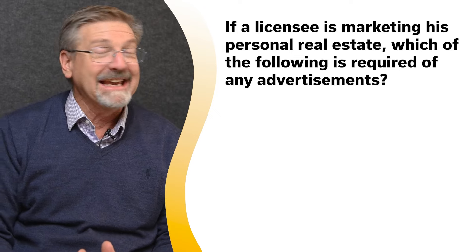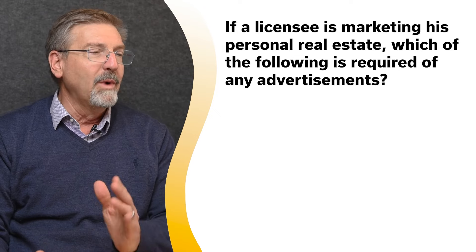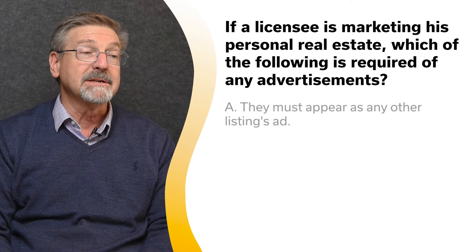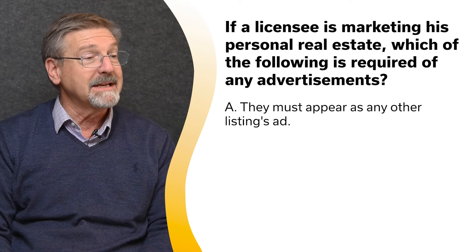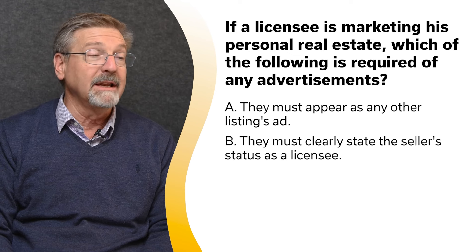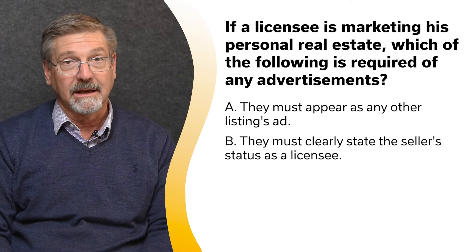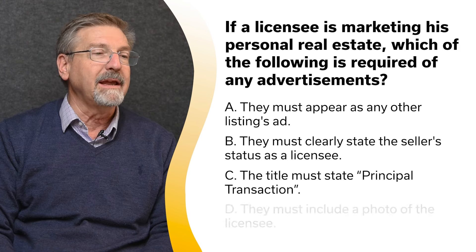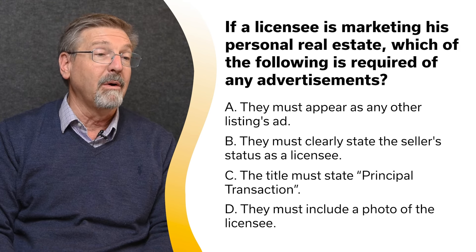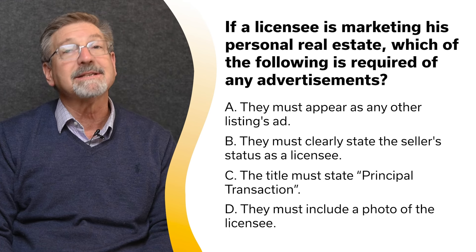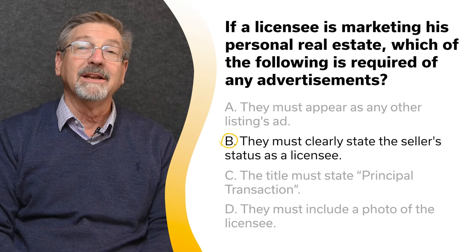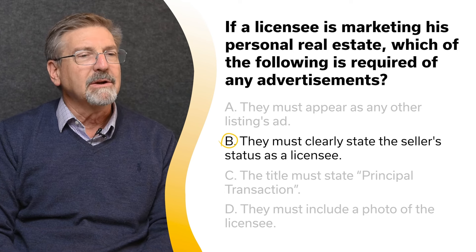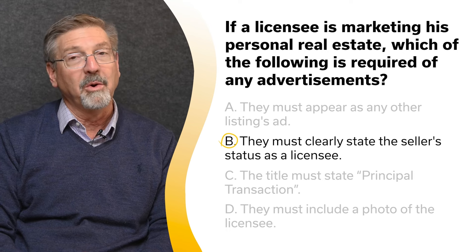If a licensee is marketing his personal real estate, which of the following is required of any advertisements? A. They must appear as any other listing's ad. B. They must clearly state the seller's status as a licensee. C. The title must state 'principal transaction.' Or D. They must include a photo of the licensee. The correct answer is B — they must clearly state the seller's status as a licensee. Licensees must disclose their status when marketing their own property.